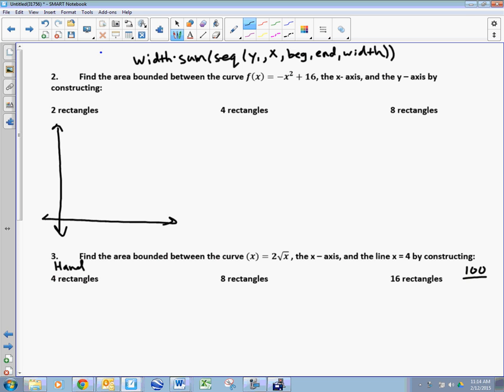So what does a graph of negative x squared plus 16 look like? Up at 16, and it's going to cross, if you solve for it, it's going to cross through 4. And notice that the problem says we're looking for the area bounded between all these things: the y-axis, the x-axis, and the curve.